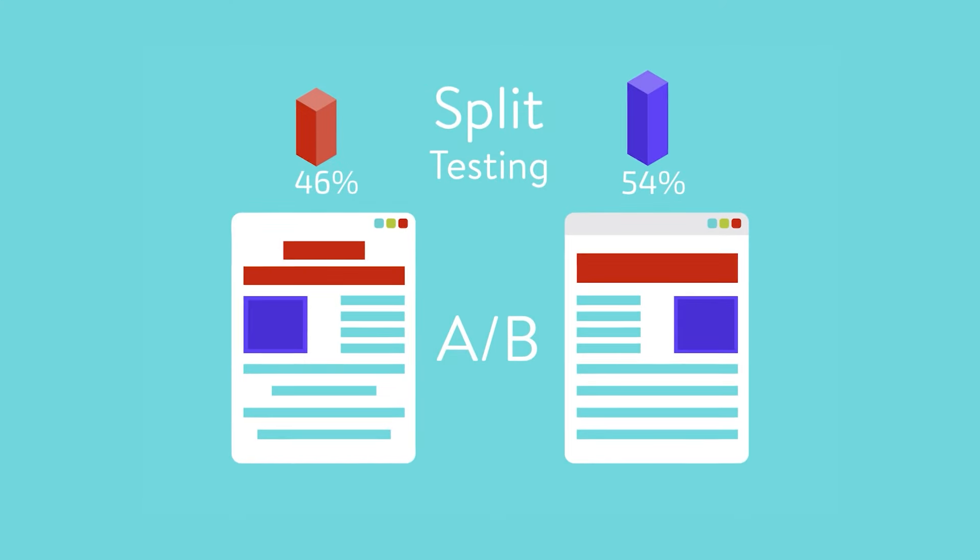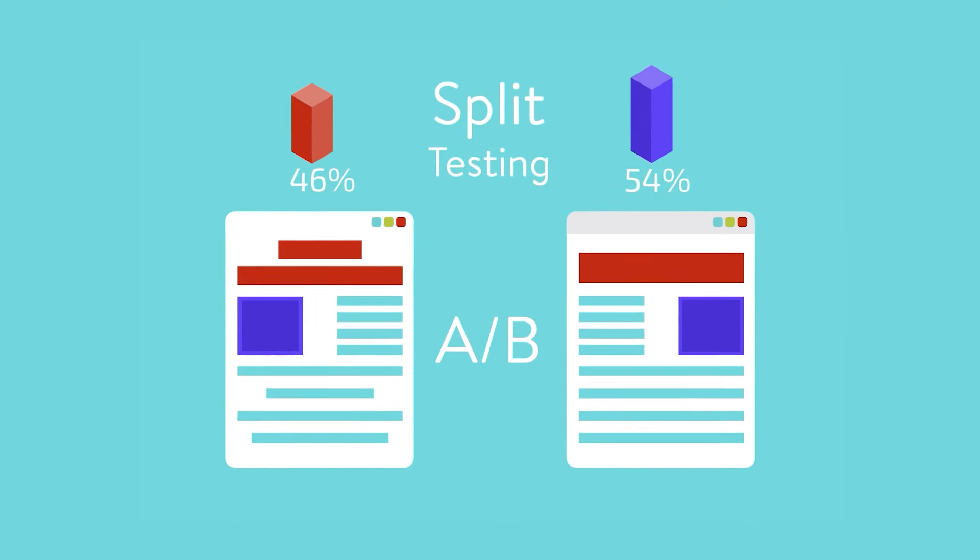So how can we do that? It's simple — by harnessing the power of split testing. Split testing, also known as A/B testing, involves comparing two or more versions of your main image, video ads, or A-plus content section to determine which one performs better. By systematically rotating different images and videos over a specific time period, you can gather valuable data and insights on customer preferences and behavior.